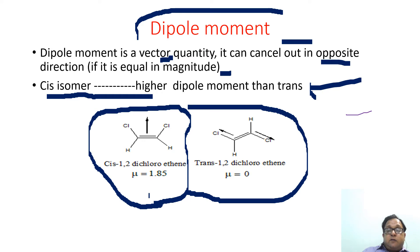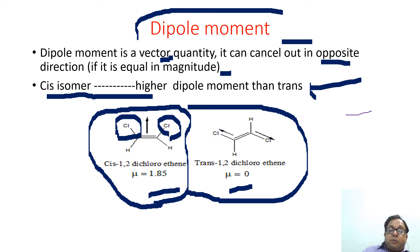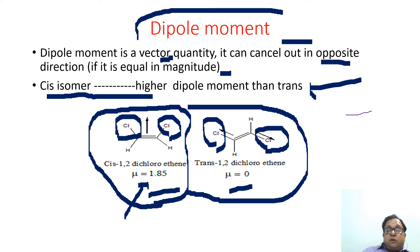The first is cis-1,2-dichloroethene and the second is trans-1,2-dichloroethene. For the cis isomer, the value of the dipole moment is 1.85 D. For the trans isomer, the value is 0. In the cis isomer, the chlorine atoms are on the same side, so being a vector quantity, they add to each other and result in 1.85 D. In the trans isomer, chlorine atoms are on the opposite or diagonal side, so they cancel out because they are equal in magnitude and opposite in direction.